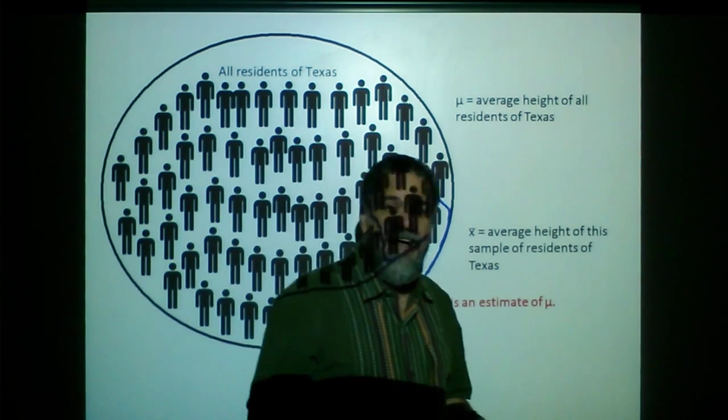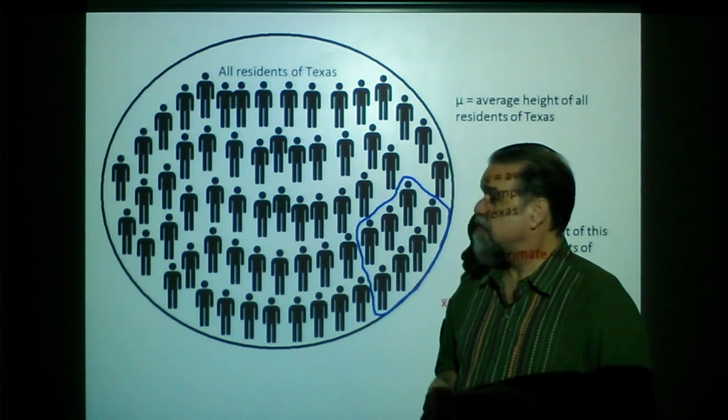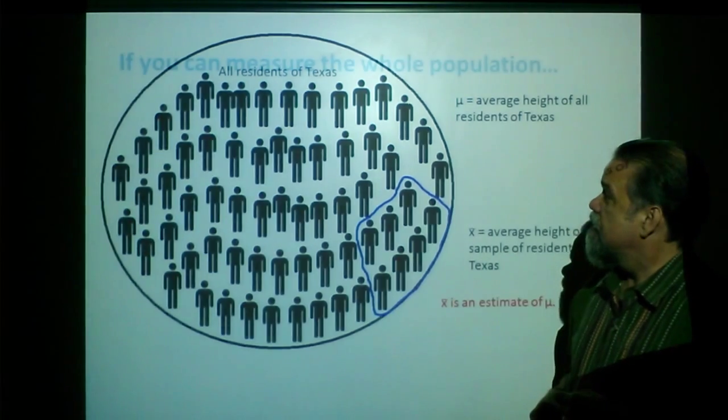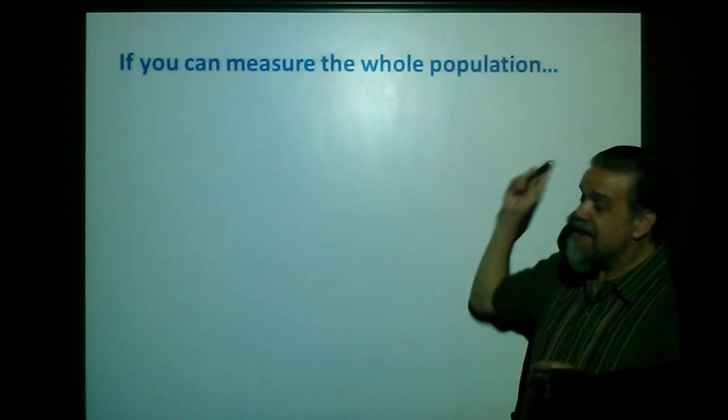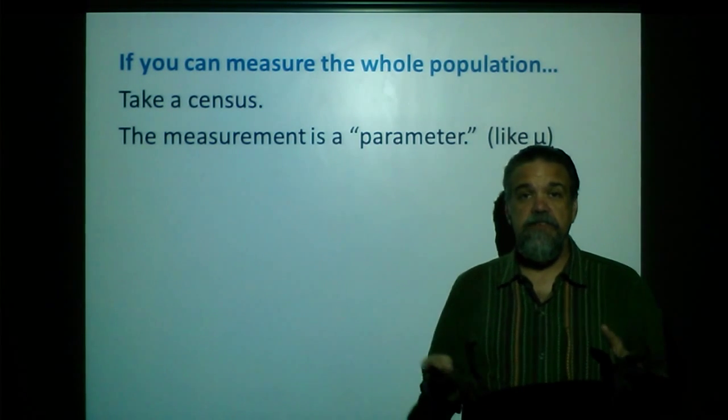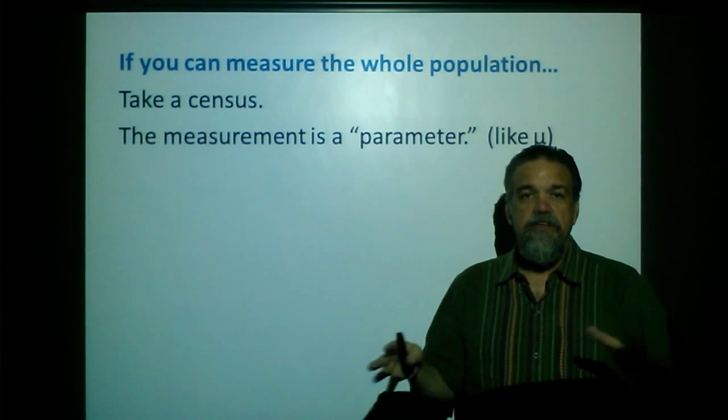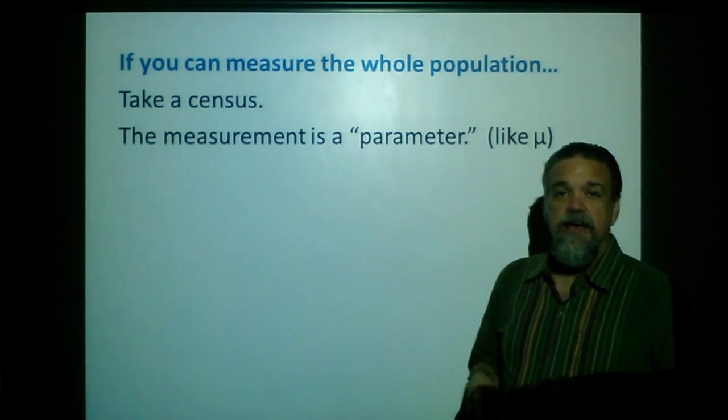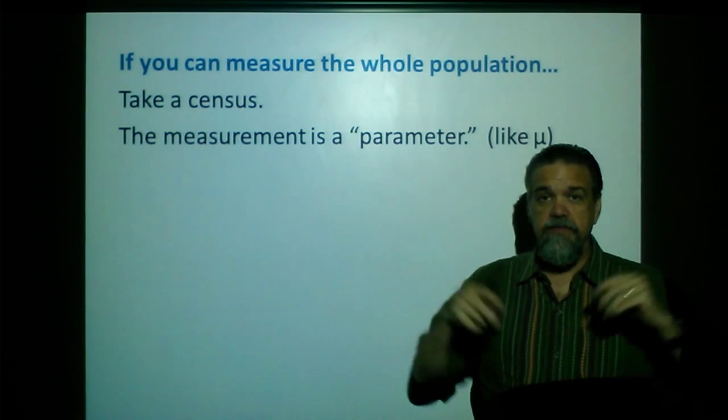Now, how good an estimate is it? That's why we have inferential statistics, so we can tell, we can answer questions like that. In summary, if you can measure the whole population, do so. Take a census. That's what a census is. It's when you measure everybody in the entire population, or every individual in the entire population. And that measurement is called a parameter. So, a parameter describes the entire population, like mu, for instance, that's a parameter.